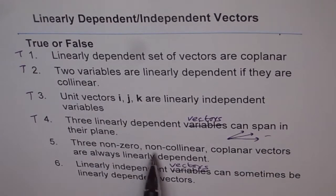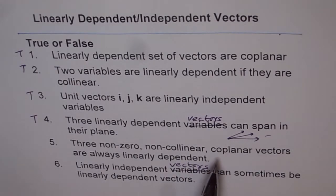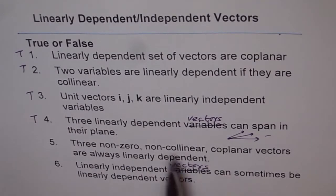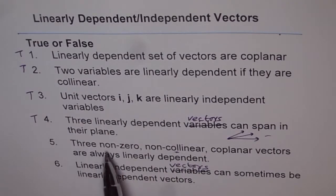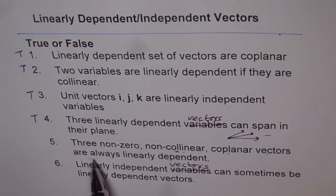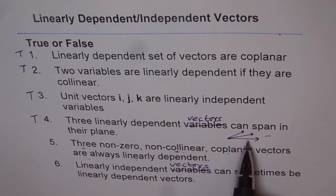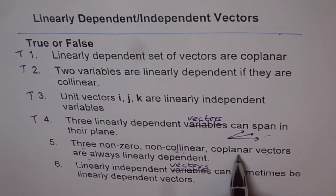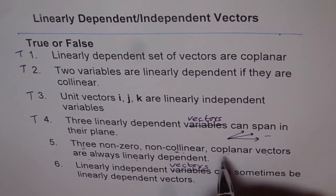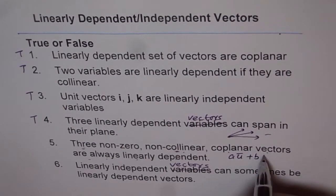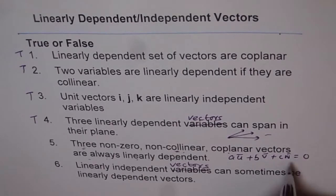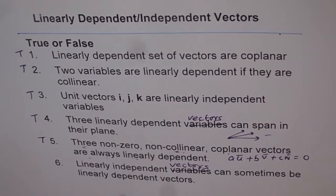Question 5: Three non-zero, non-collinear — meaning not parallel — coplanar vectors are always linearly dependent. This is true. If there are three vectors in one plane, their combination can give you zero, or one can be expressed in terms of the other two. So we can write: aU + bV + cW = 0 when they are in the same plane. This statement is true.